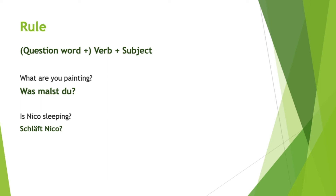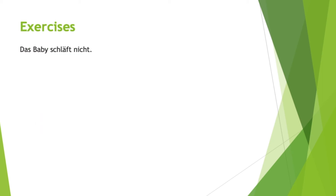Now let's practice. Transform these German sentences into yes/no questions. In the first one we have a negation — that's no problem. Just switch the subject and the verb like normal and leave 'nicht' at the end. We have 'das Baby schläft nicht,' which means 'the baby isn't sleeping.' So to ask 'Isn't the baby sleeping?' — Schläft das Baby nicht? Good job.